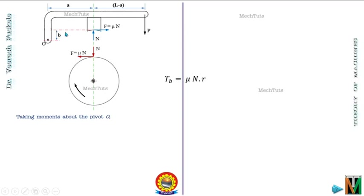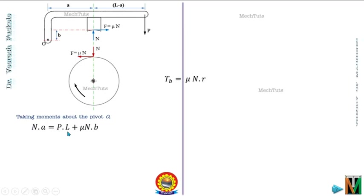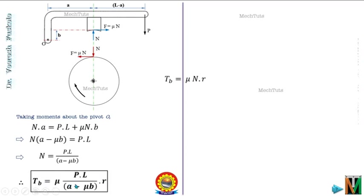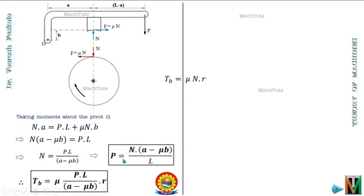This is the perpendicular distance of the line of action of force F from the fulcrum point. Writing the moment equation: N × a = P × l + μN × b. Taking the μNb term to the left side gives N(a − μb) = Pl, so N = Pl / (a − μb). Putting this into the torque equation gives the braking torque T_b = μPlr / (a − μb). The applied force P can also be expressed as P = N(a − μb) / l.